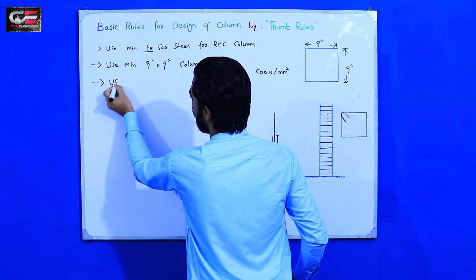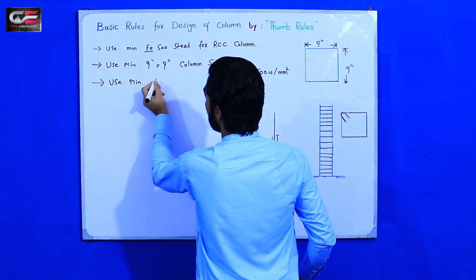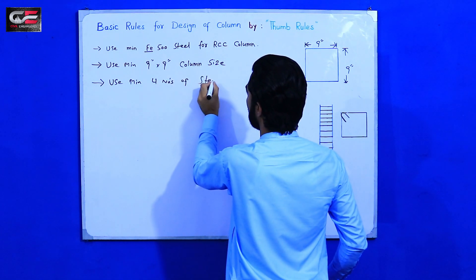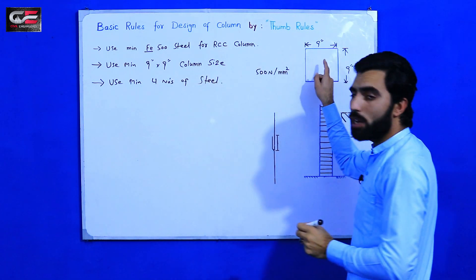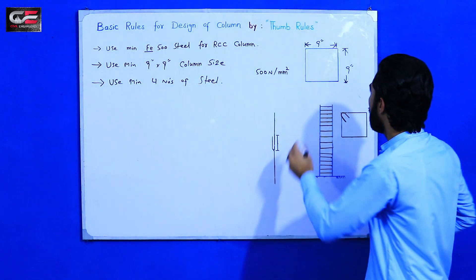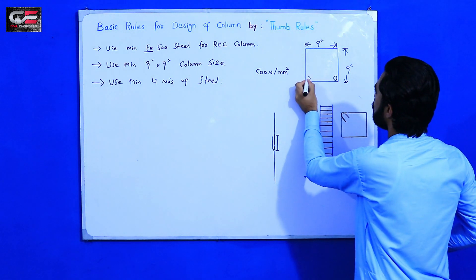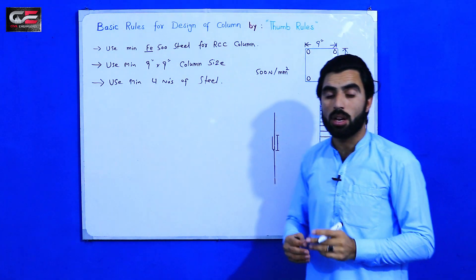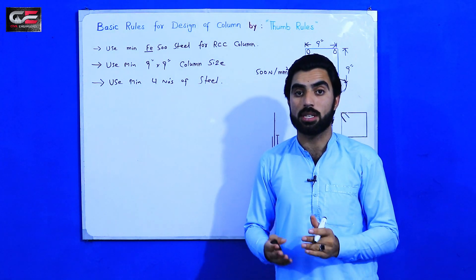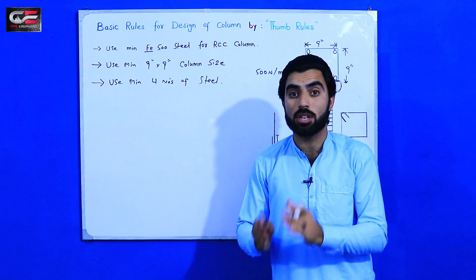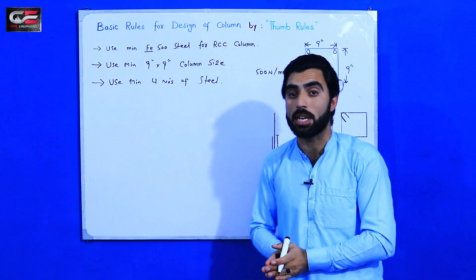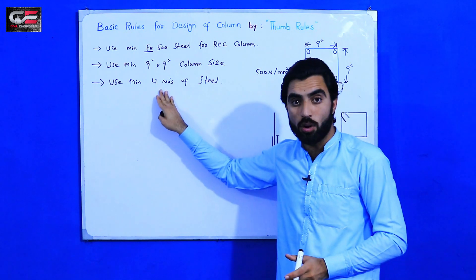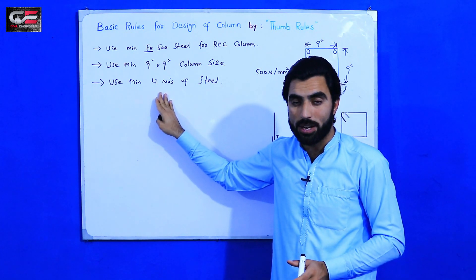The third point in basic rules: use a minimum of four numbers of steel bars — one, two, three, four. If you are using more than four bars, for example six or eight, that depends on the structural load and design. But longitudinal bars should not be less than four numbers for square or rectangular columns.